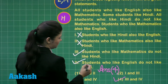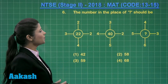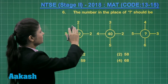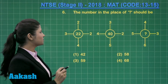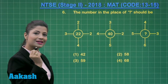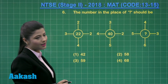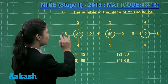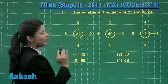Let us move on to our next question. This is a question again related to the missing term. Here, the number in place of the question mark should be. You can observe we have the pattern of numbers. When you observe this pattern, here we have the numbers 4, 3, 2 and 2, and in the center we have 22.